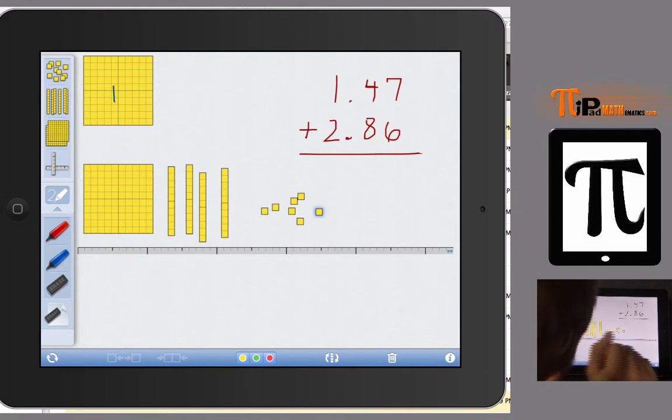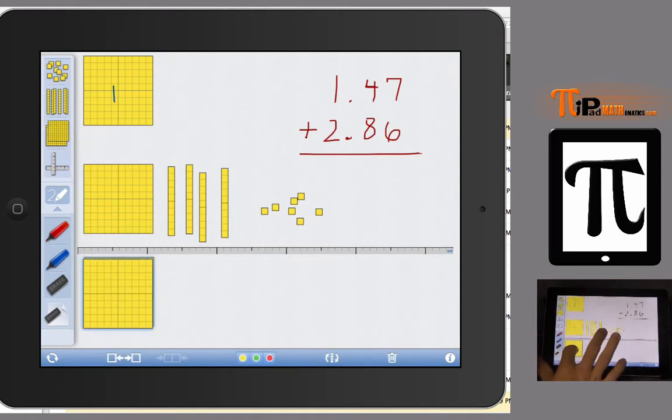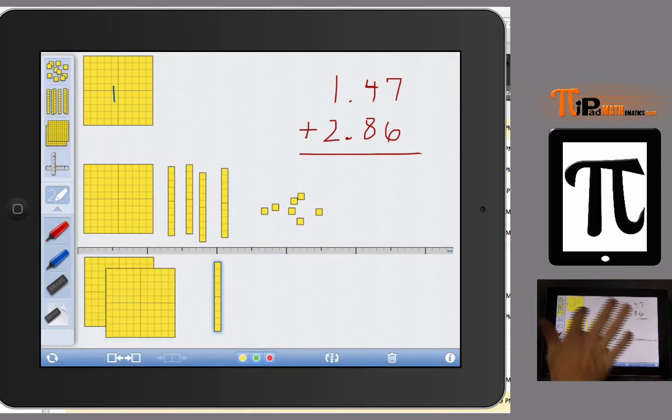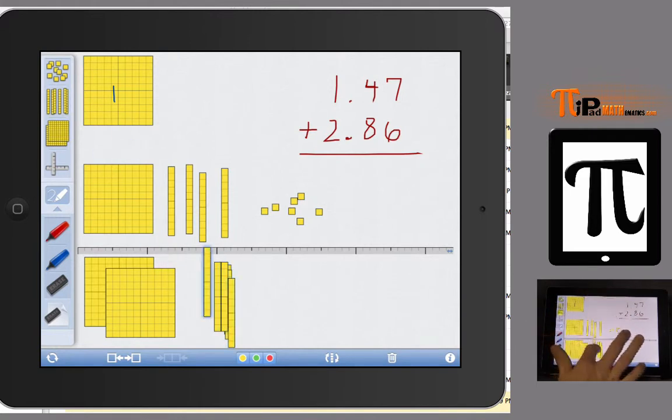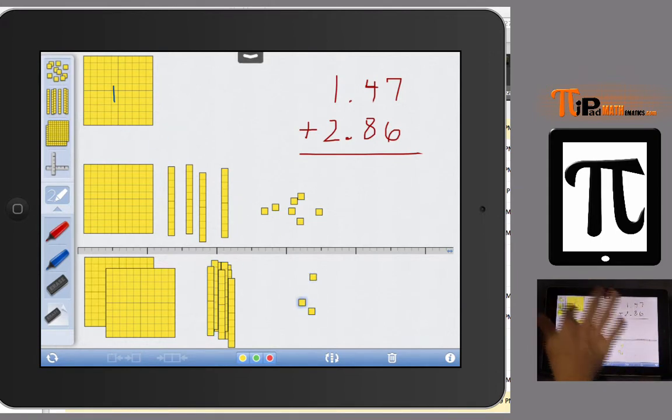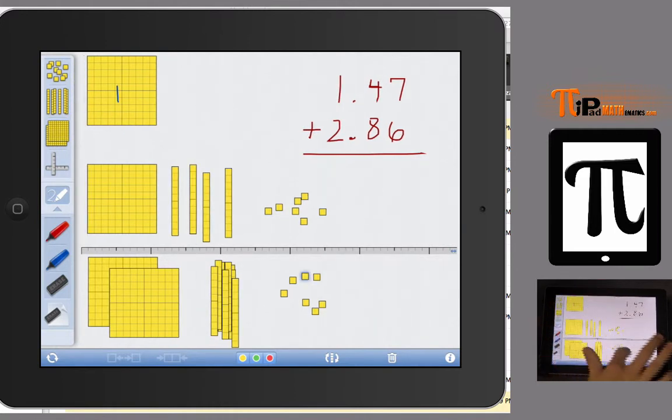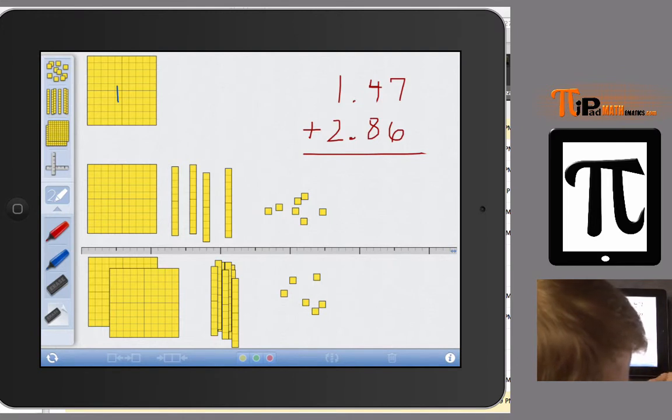So I have 1 and 47 hundredths. And then I am going to add to that 2 and 86 hundredths. Alright, so I have 1 and 47 hundredths plus 2 and 86 hundredths. And we are now combining.